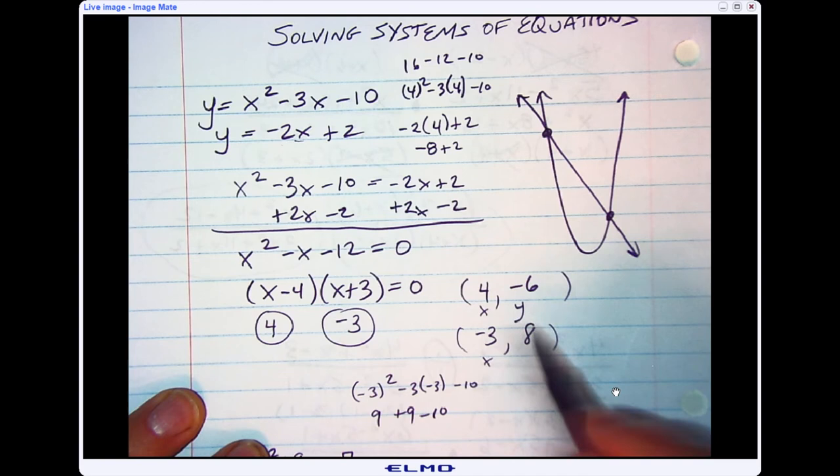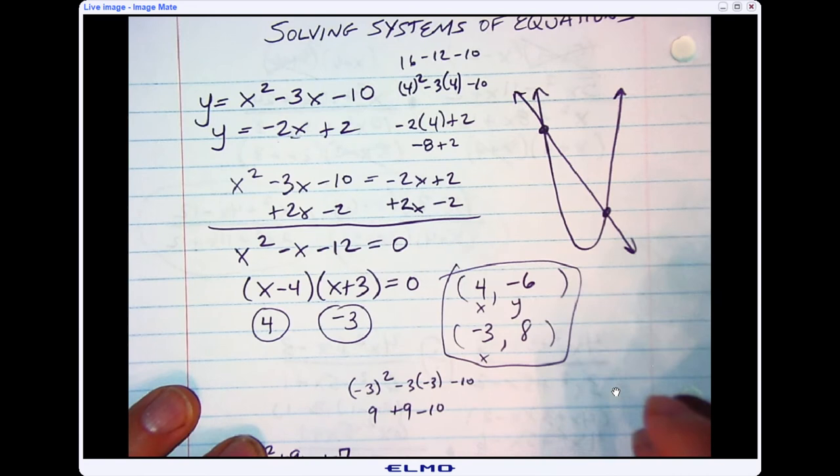So these would be my solutions. These are the two points of intersection. I did that all algebraically without having to graph. We're going to do one last example here.